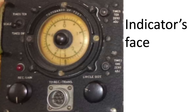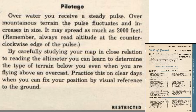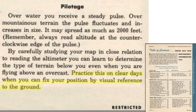This is a close-up view of the indicator's face. If flying over hilly terrain, multiple reflection pulse responses will show up in the circle trace. For safety, read the lowest reflection altitude lobe. Other system issues are listed on this page. Over water, a steady pulse is received, whereas over mountains the pulse fluctuates and spreads. Practice comparing terrain and topographic maps during your missions so you can estimate the terrain on overcast missions from experience reading the indicator dial's reflection pulse.